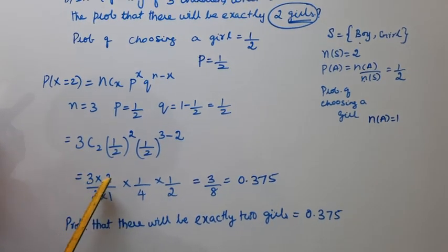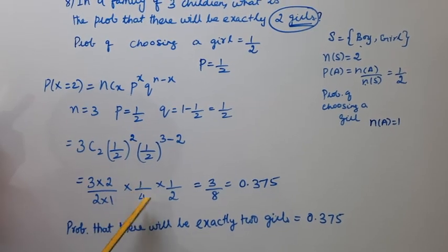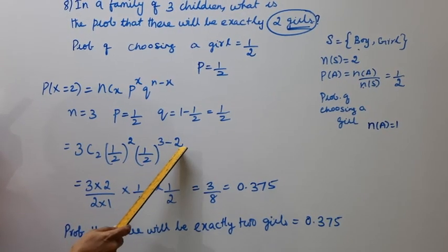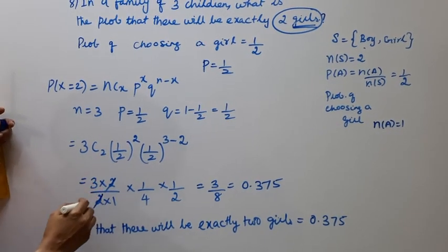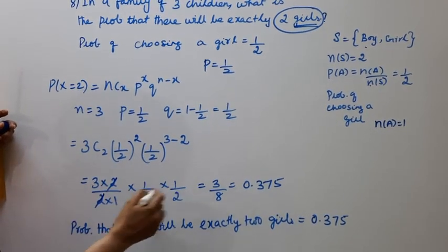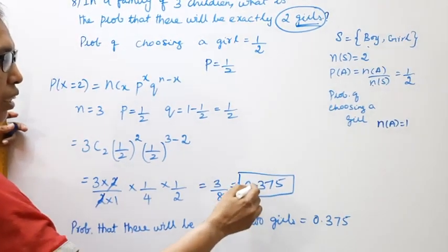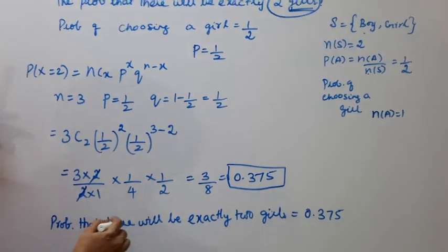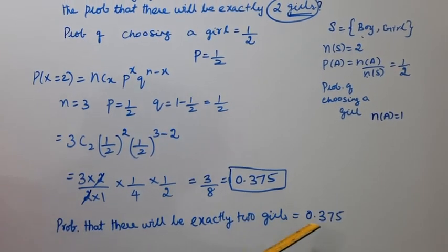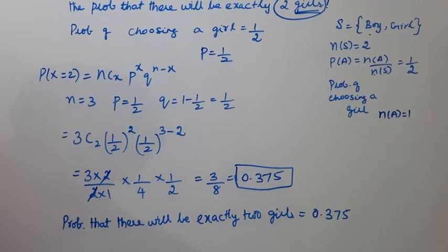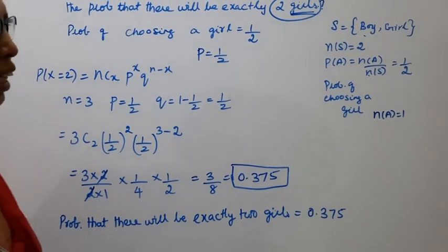For exactly 2 girls, x equals 2. So 3C2 times (1/2)^2 times (1/2)^1 equals 3 times (1/4) times (1/2) equals 3 by 8 equals 0.375. The probability that there will be exactly 2 girls is 0.375.